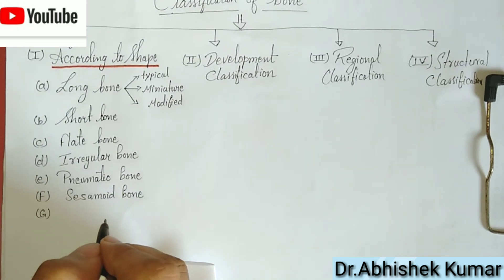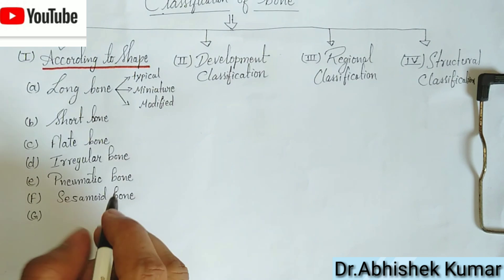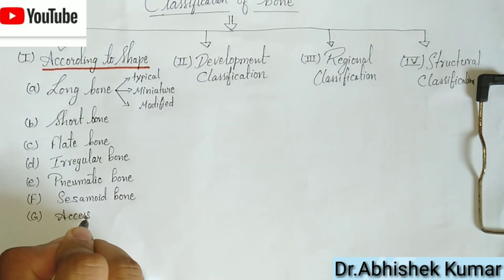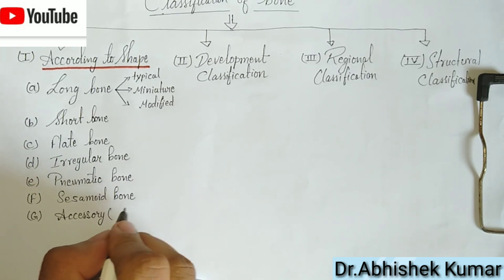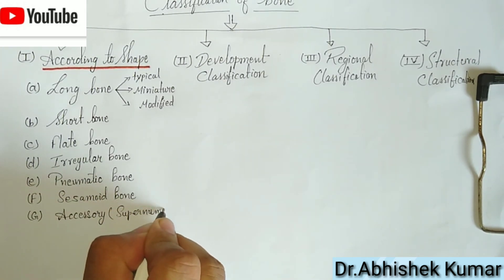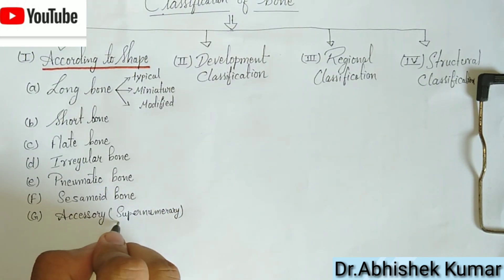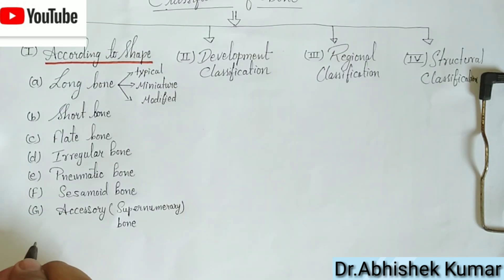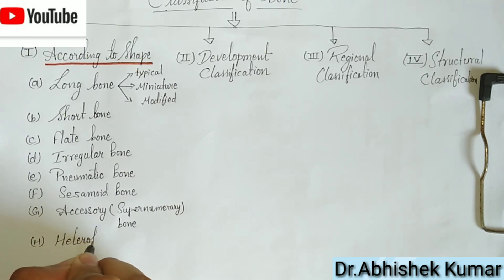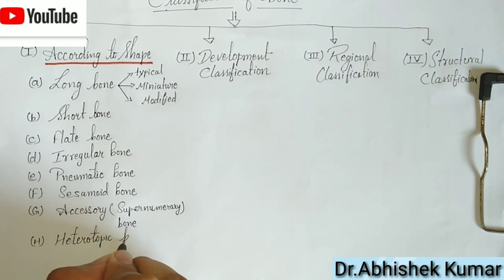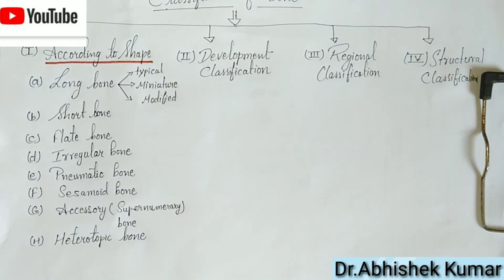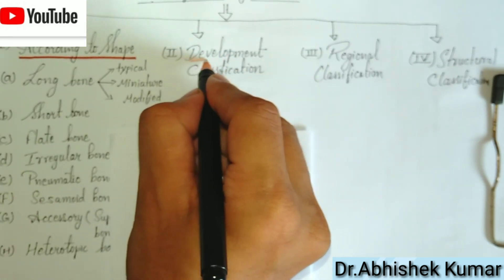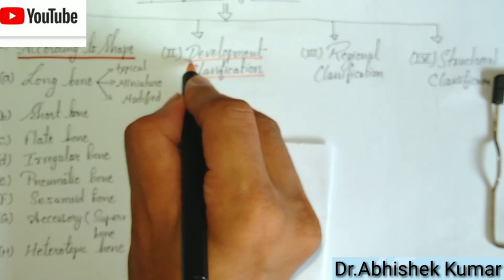Now come to the accessory bone, also known as the supernumerary bone. Supernumerary bones are not always present, but these bones may get ununited epiphysis developed from an extra center of ossification, like suture bones. Then heterotopic bones — these sometimes develop in soft tissue. For example, horse riders can develop bone in the abductor muscles, also known as rider bones.